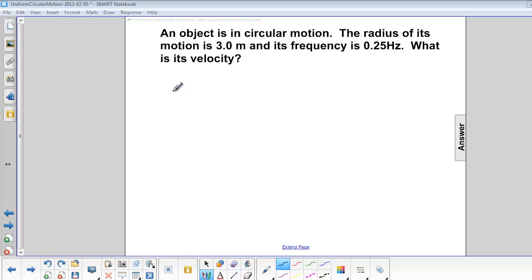An object is in circular motion. The radius of its motion is 3 meters, and its frequency is 0.25 Hz. What is its velocity?